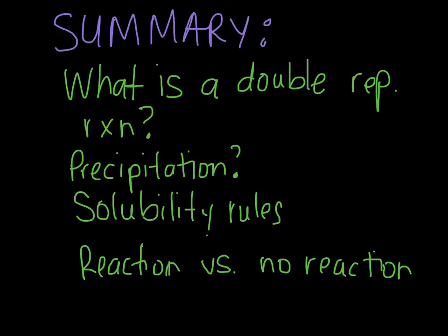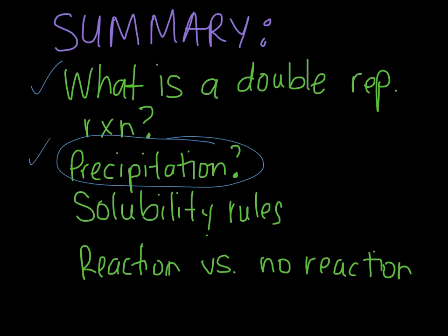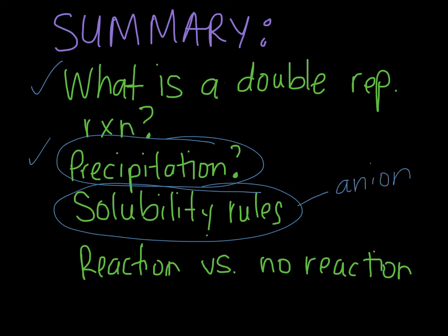For this video, I want you to write a summary because this is a pretty difficult concept. Go over what a double replacement reaction is, make sure you discuss what a precipitation reaction means, and explain how we use the solubility rules — remember, it all depends on the anion. Also talk about how in some situations you can have a complete reaction, and in some situations you can have no reaction.